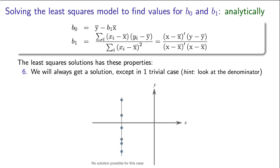Hopefully you came to the conclusion that as long as there's variation in the x-data, as long as the variance of x is non-zero, you will always obtain a solution for the least squares model.